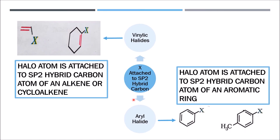When the carbon atom to which the halo group is attached is sp2 hybridized, we have two types. First, vinylic halides — where the halo group is directly attached to an sp2 carbon of an alkene or a cyclohexene. Second, aryl halides — where the halo atom is attached to the sp2 hybrid carbon atom of an aromatic benzene ring.